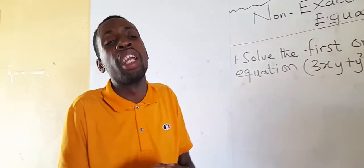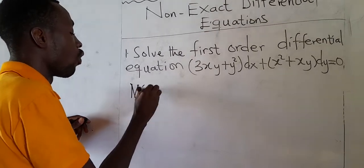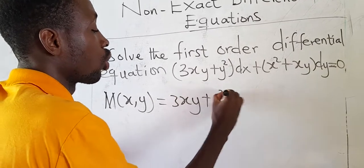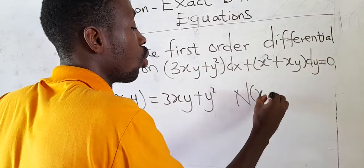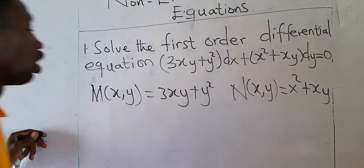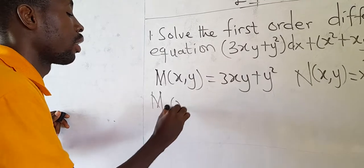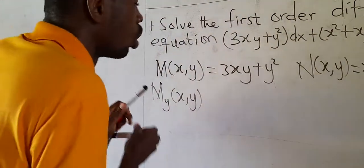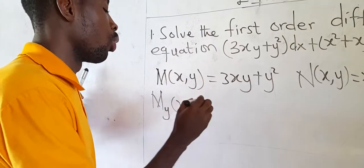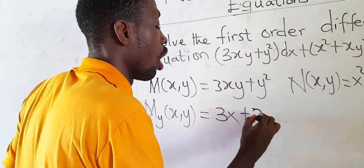First, we determine whether the equation is exact or non-exact. We let M(x, y) = 3xy + y² and N(x, y) = x² + xy. We find the partial differentiation of M with respect to Y, keeping X constant. Since 3xy is linear in y, the derivative is just the coefficient: that gives us 3x + 2y.